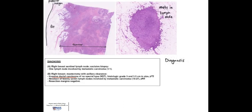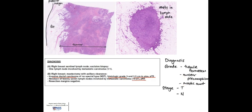The job of a pathologist is to provide the diagnosis and useful prognostic information, such as grade — determined by degree of tubule formation by the tumour, nuclear pleomorphism, and mitotic count — and tumour stage, determined by the size of the tumour and the number of lymph nodes involved. Finally, assessment of margins for the presence of tumour, which is important to the surgeon.